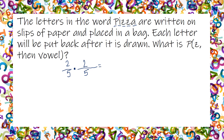So if I want to know the probability of getting a Z first and then a vowel, I have to multiply those two. Two times two gives me four, and five times five gives me 25. So I have a four out of 25 chance to get a Z and then a vowel.